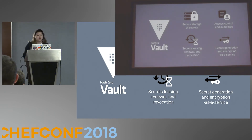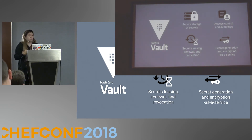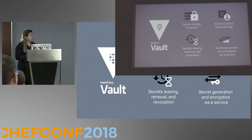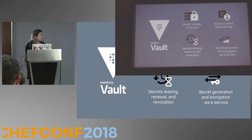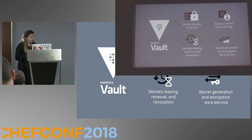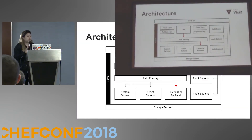HashiCorp Vault is an open source, user-managed server application. It allows you to provide a single source of truth for secrets and credential management within an organization — often referred to as secrets as a service. It allows both programmatic access for machines and operator access for human developers. The entire system is controlled via fine-grained ACLs and policies, and it handles both long-lived secrets and leased secrets with a TTL, which can be renewed or automatically revoked.